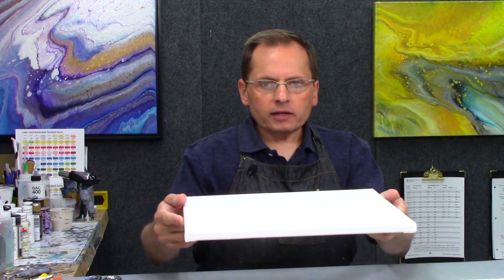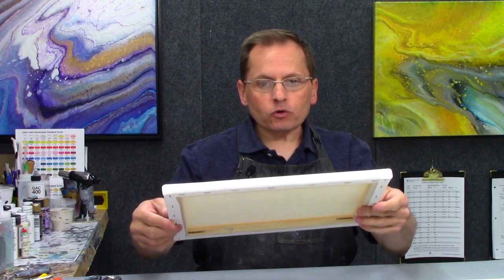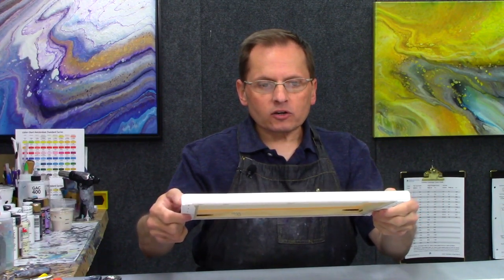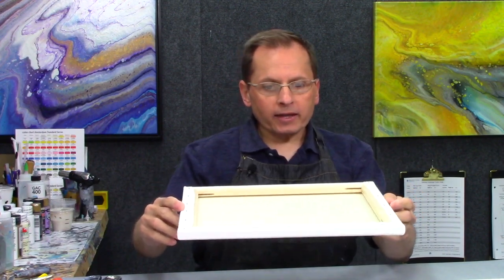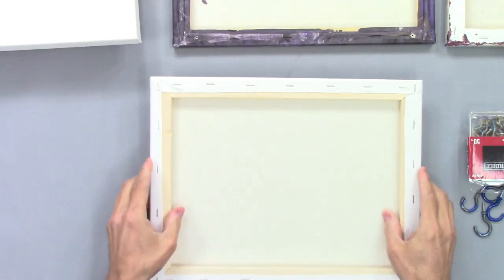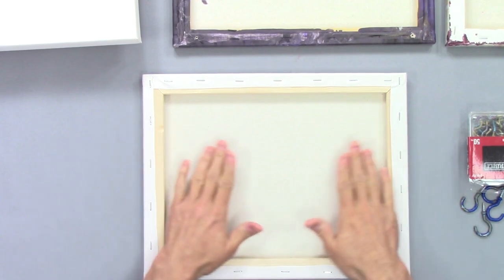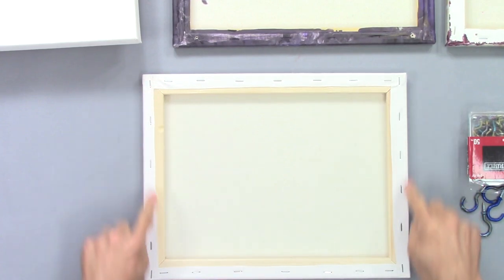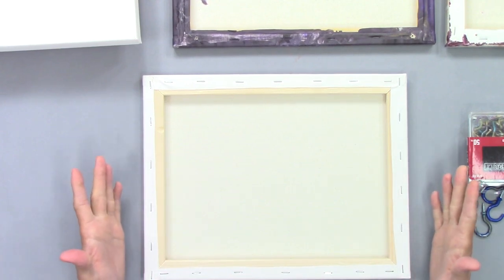So first, what kind of canvases do I pour on? Generally two types. I pour on the rather inexpensive three-quarter inch thick ones that you generally find in canvas packs, like the value canvas packs. This is an 11 by 14 canvas and these are generally called a back stapled canvas. They pull the canvas over the stretcher bars and staple them. That's usually a cheaper way to make a canvas.